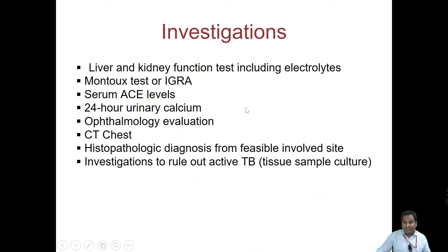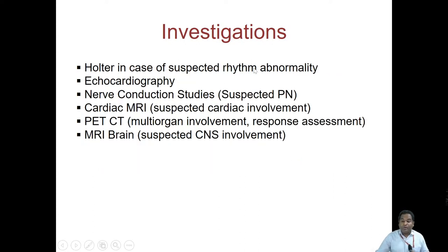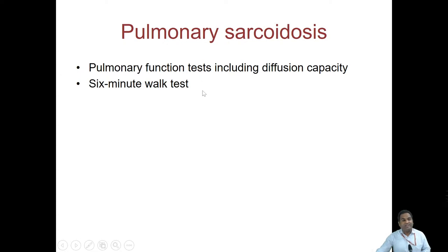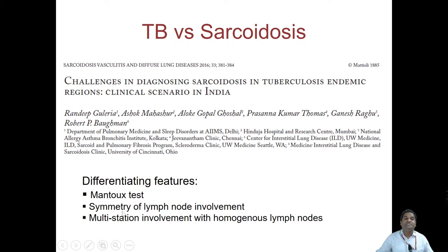Investigations usually done include LFT, KFT, Mantoux test, serum ACE levels, 24-hour urinary calcium, eye evaluation, CT chest, biopsy from an involved site, and investigations to rule out active TB. For extra-pulmonary involvement we may need Holter, ECG, NCS, MRI, PET scan, and MRI brain. For lung involvement, pulmonary function test and six-minute walk test help in follow-up. Important differentiating features between TB and sarcoid: Mantoux test is much more commonly positive in TB; symmetry of lymph node involvement is more in sarcoidosis; TB tends to have asymmetric lymph nodes; multi-station involvement with homogeneous lymph nodes is more common in sarcoidosis.